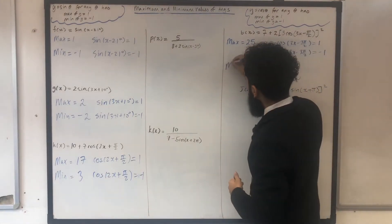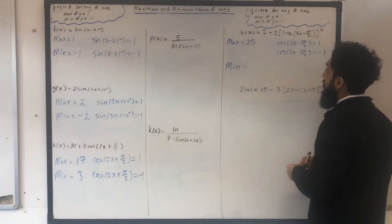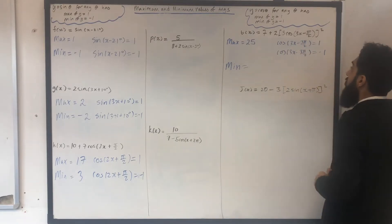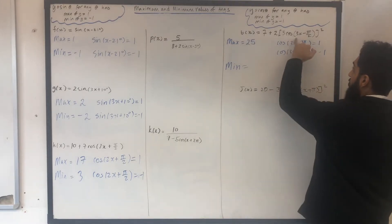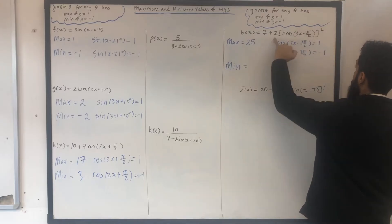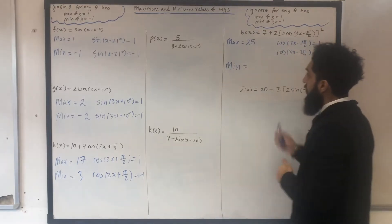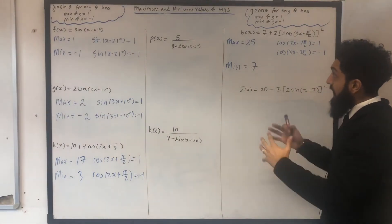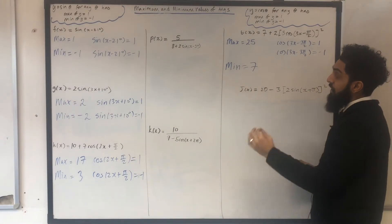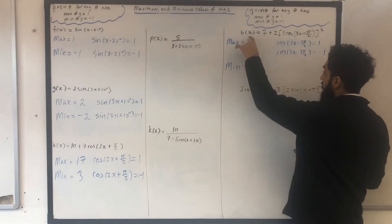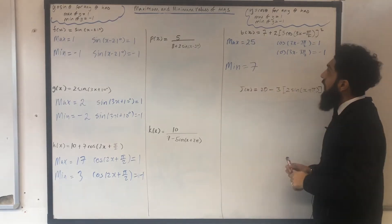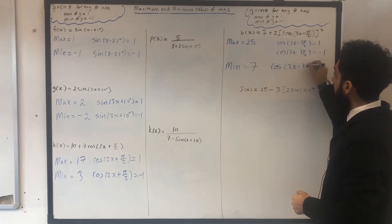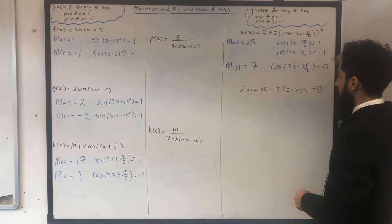Now I want to work out the minimum value of the function t of x. To minimise t of x, I need to set the cos equal to 0. So: 3 times 0 is 0, 0 squared is 0, times 2 is 0, plus 7 is 7. So the minimum value of t of x is 7. In the exam, I could be asked to work out the smallest positive value of x for which t of x has a minimum of 7. I need to solve the equation cos in bracket 3x minus 3 pi over 2 equal to 0.